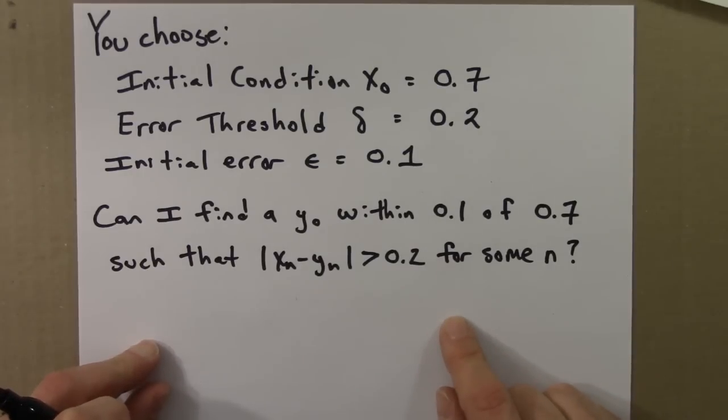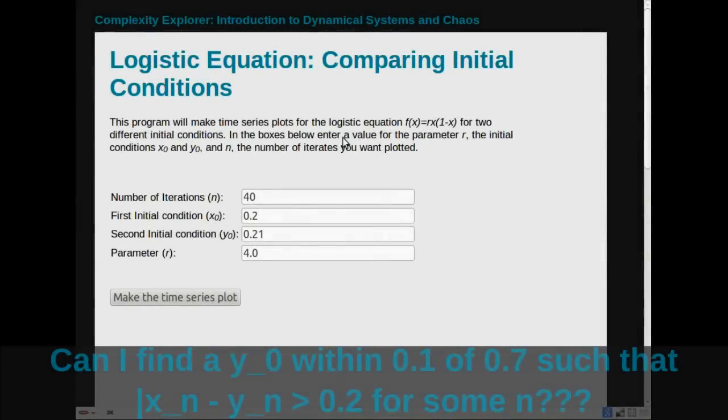Can I do it? I'm pretty sure I can. I'll use the program that we were using earlier on the web to see if I can find a y₀ that meets this criteria. I'm looking for a y₀ that's within 0.1 of 0.7. I should mention that this is for the logistic equation with r equals 4.0, since we're looking at the aperiodic chaotic case. For x₀, I choose 0.7—well, I don't, I mean I typed that in, but you chose that for me in this task. I need to choose some other initial condition that's close to 0.7. How close? It can't be more than epsilon away. The epsilon you gave me is 0.1. I'll try 0.72. That meets the criteria. And then I'm going to make the time series plots.